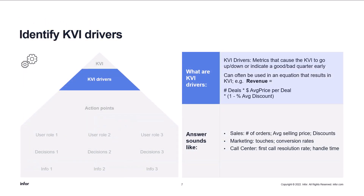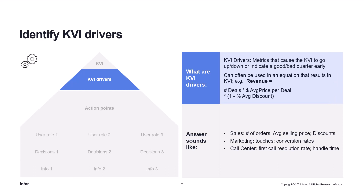After KVI comes the KVI drivers. KVI drivers are things that will affect the KVI — metrics that cause the KVI to go up or down. Quite often they can be used in an equation. So revenue equals, in this case, number of deals times the average price per deal, and then you take into consideration the discount. Usually you have two to five KVI drivers for each KVI.